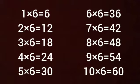Multiplication table of 6: 1×6 is 6, 2×6s are 12, 3×6s are 18, 4×6s are 24, 5×6s are 30, 6×6s are 36, 7×6s are 42, 8×6s are 48, 9×6s are 54, 10×6s are 60.